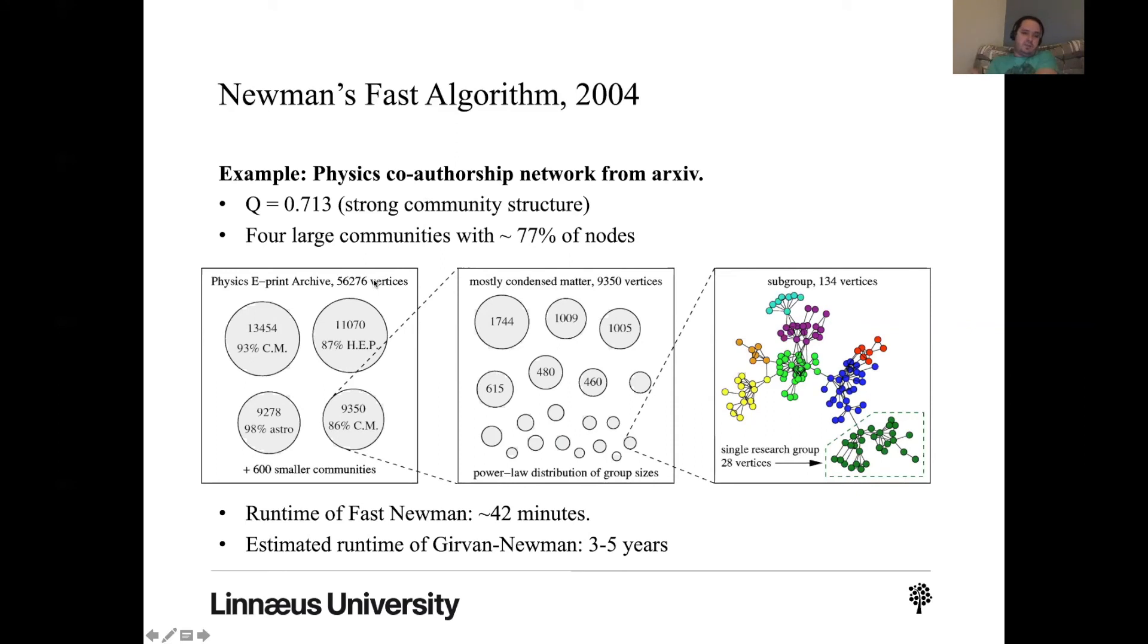And the interesting thing is that they don't know. The runtime of the fast new algorithm was 42 minutes for this, but they don't know. Like, they estimated that if they run this with the previous algorithm, it would take like three to five years to actually finish running, which is obviously quite crazy. I mean, they didn't, they don't know for sure, but they estimated that. And the runtime of fast new was around 42 minutes.